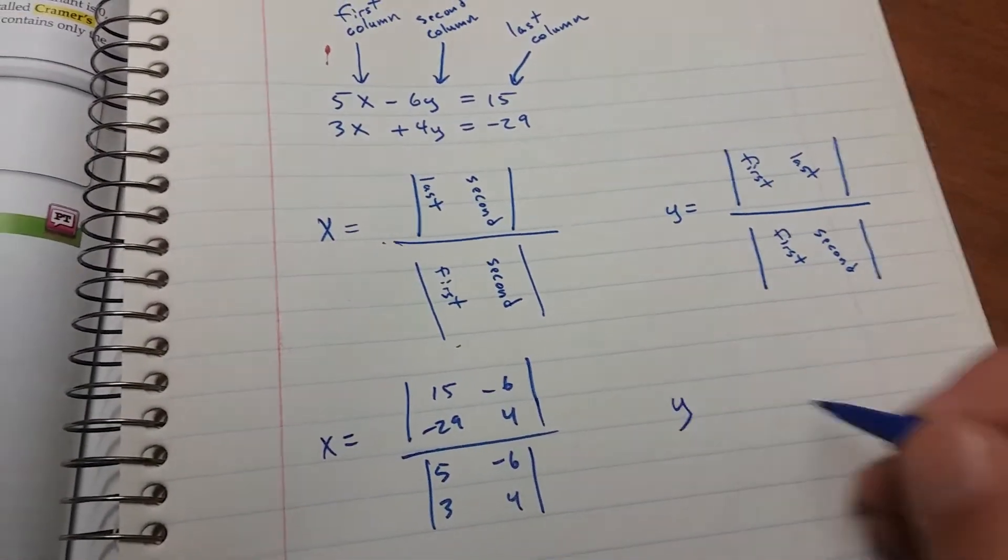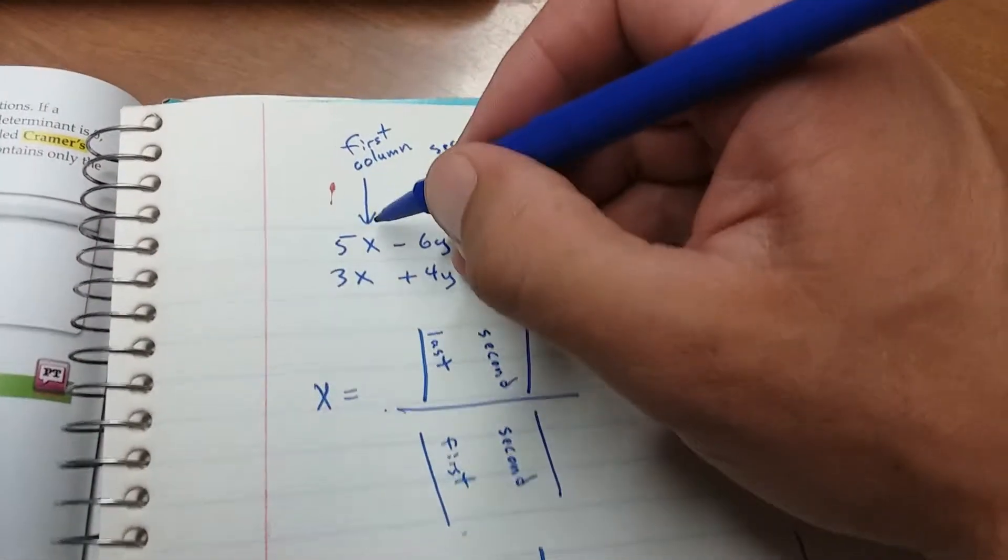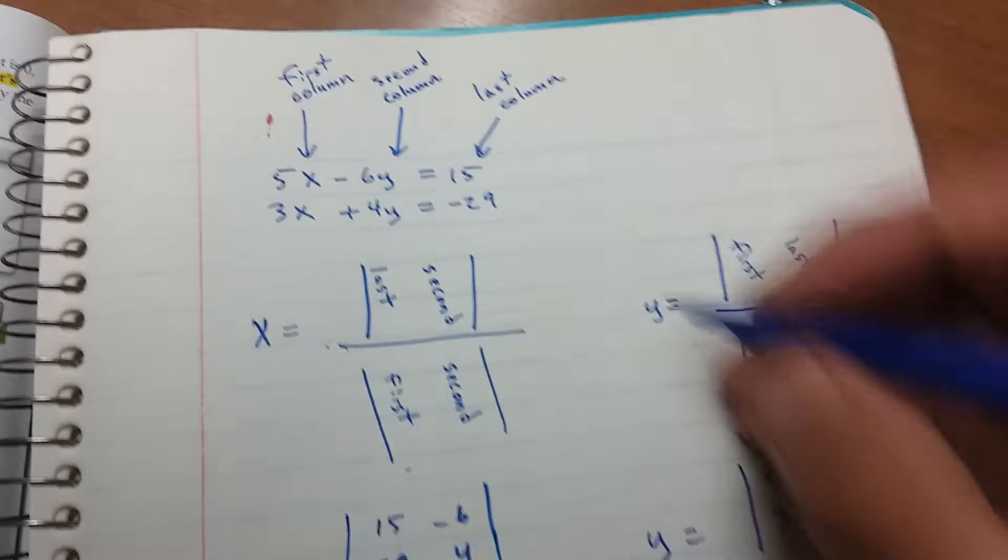Y is going to equal the determinant of your first and last, 5, 3, 15, negative 29.